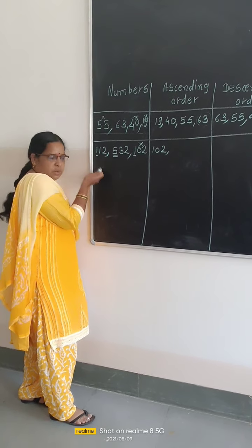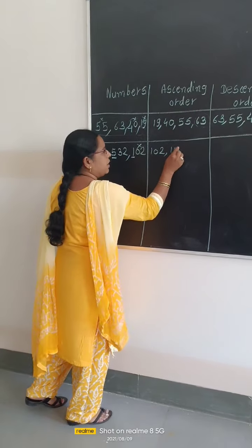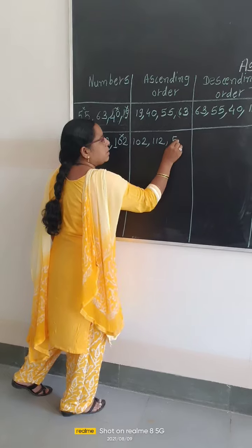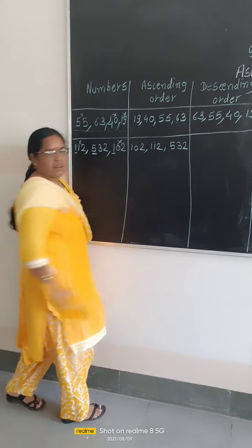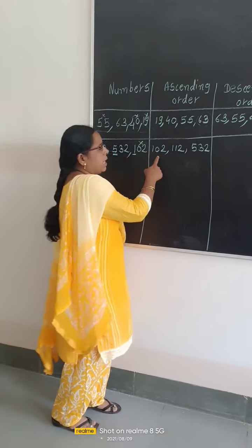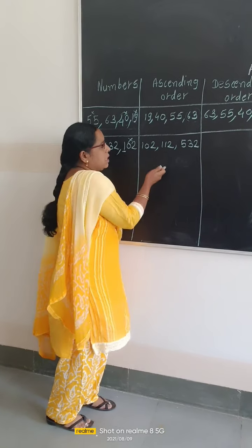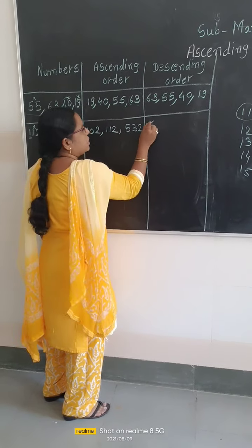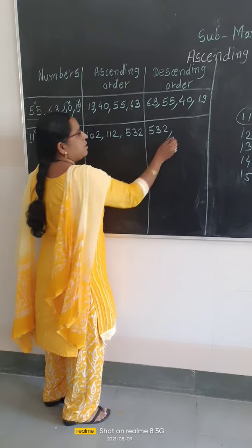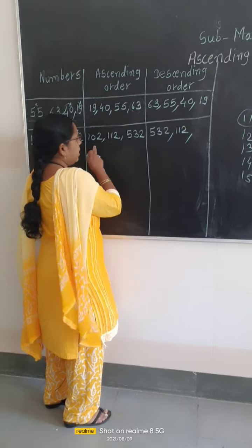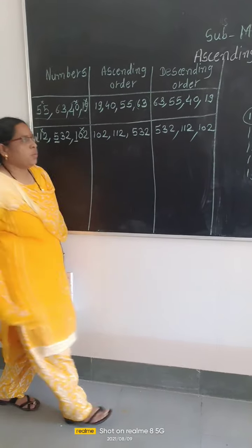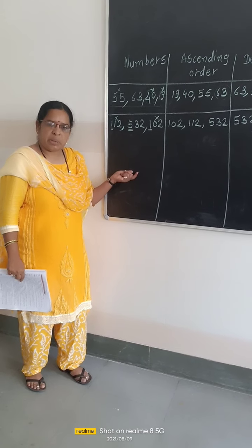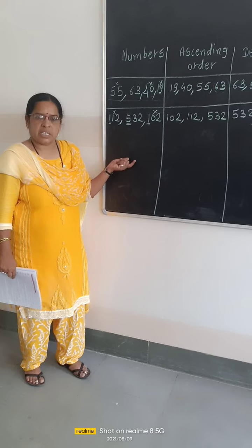Now cancel this 102. From the remaining two numbers, which is the smallest? As we know, the number with 1 at the hundreds place is smallest, and remaining is the 532. That's why we are writing this next. Now, if we are arranging ascending order, then from there you can easily arrange descending order. Firstly write 532, then the number with 1 in hundreds place, and then the number with 0 in hundreds place, which is 102.